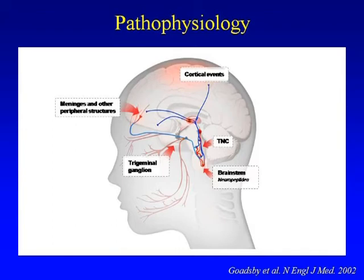Some doctors believe the primary event is actually in the brainstem. We don't have consensus about where migraine starts, but we know there is activation of trigeminal nociceptive pathways and that certain centers contribute. This all happens during the episode of migraine. In chronic migraine, there is continuous nociceptive processing called central sensitization.